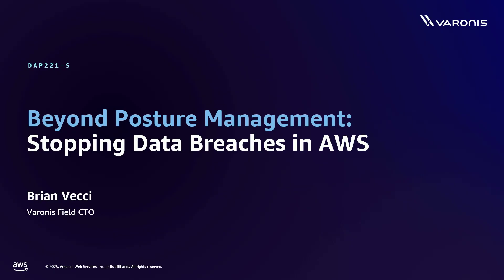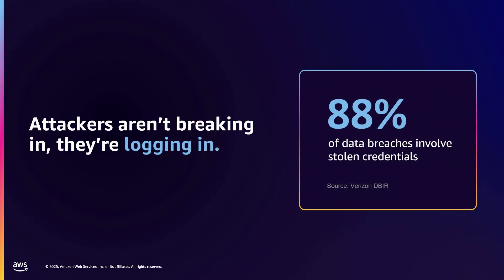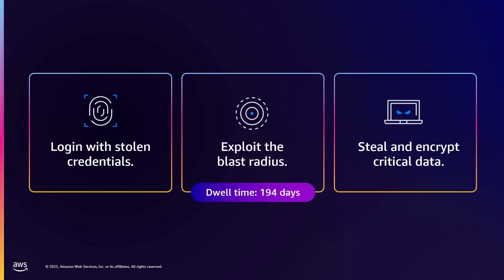You all care about AWS. Presumably you care about security, which is why you're here. 88% of data breaches start at the identity layer, which probably isn't surprising. Attackers don't break in. The number one goal of a threat actor is to get access to credentials, because once you get access to credentials, you can move laterally, you can establish persistence, you can elevate your privileges, and you can get access to and steal data.